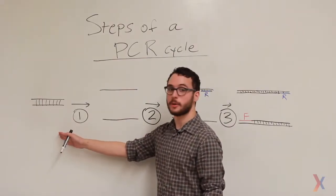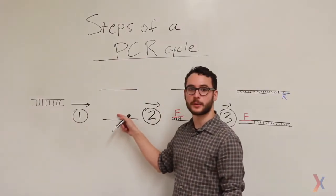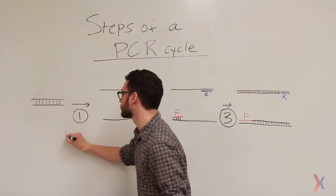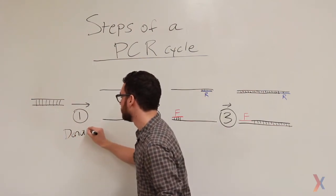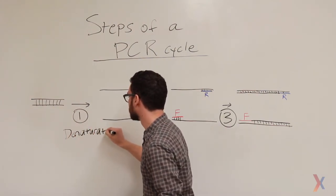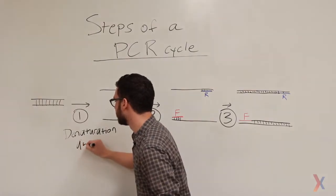In the first step, double-stranded genomic DNA is heated up and separated into two single strands. This step is called denaturation, and it occurs at 95 degrees Celsius.